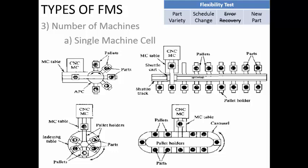There are different possible configurations, as shown in the figure — an inline configuration, a rotary indexing table, or a carousel mechanism. The carousel mechanism is like a loop suspended from the top by rails. Basically, there is only one CNC machine or manufacturing station, and various work parts are loaded on top of a pallet. A pallet is a flat surface on which the raw material or semi-machined part is fixed before going into the CNC machine where all activities are performed.